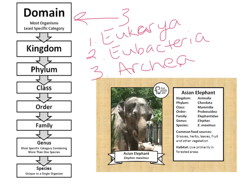For instance, the Eukarya domain only requires that organisms have eukaryotic cells. That covers plants, animals, fungus, and protists — as long as there is a eukaryotic cell, it's part of that domain. So these are big, broad, not very specific categories.